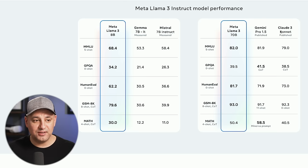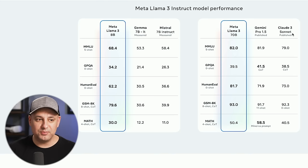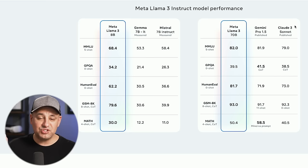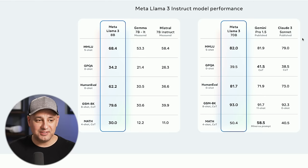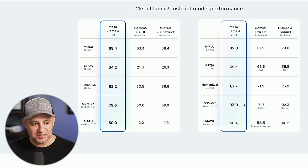They compared Meta Llama 3 versus Gemini Pro 1.5, which powers the free version of Google Gemini, and Claude 3 Sonnet, which is the middle tier free to use. The best version of Claude — Claude 3 Opus — is not in this benchmark. Claude 3 Opus and GPT-4 are still at the top tier. However, Llama 3 70B is beating Gemini Pro 1.5 and Claude 3 Sonnet, though it's very close in most use cases and even loses in some.